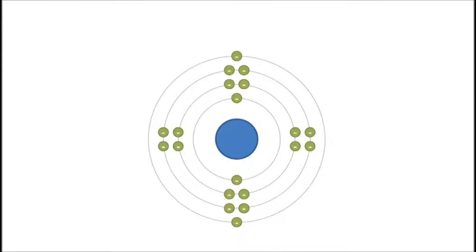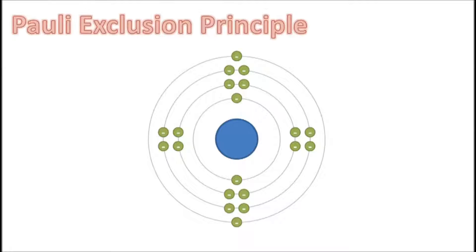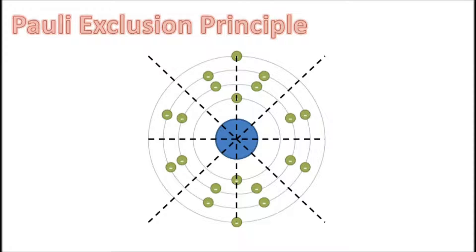But the Bohr model, while inaccurate with the absence of subshells, subtly puts in place the three rules of electron configuration. Pauli's exclusion principle is explained by dividing a shell into quarters with 2 electrons per quarter, instead of dividing a shell into 8 with lone electrons, though the half-integer spin of electron pairs is not shown.